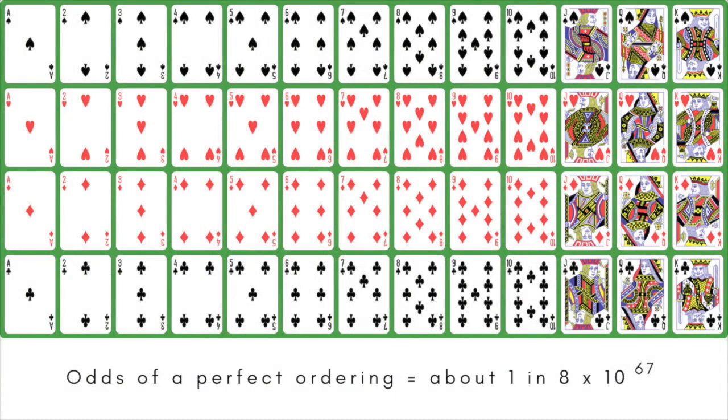If a deck had been randomly shuffled every second since the start of the universe, there would have been time for only about 4.32 times 10 to the 17 shuffles, an insignificant proportion of all the different ones possible. It's fair to say that any story about a random shuffle having produced a perfect ordering of the deck isn't true. The odds are 80 million trillion trillion trillion trillion trillion to 1 against. Such claims generally mean that someone is fibbing, or the shuffle wasn't truly random.